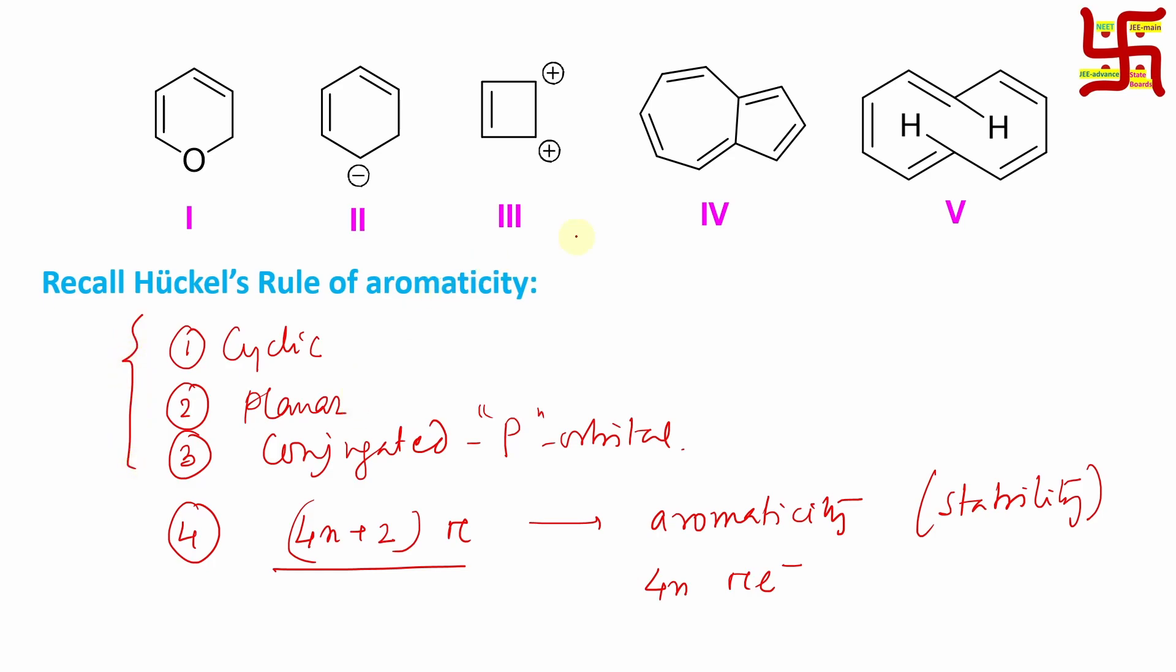Now if you look at option number 4, every atom has p orbital, cyclic, planar, conjugated. So 4n plus 2 number of pi electrons. So 1, 2, 3, 4, 5. So 10 pi electrons. I mean if you look at 4n plus 2 rule then n value is equal to 2 here. So this is aromatic.